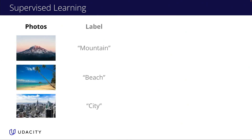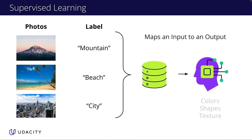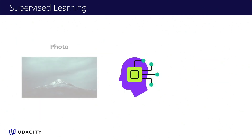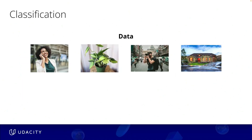In supervised learning, we provide the model with many photos, each with labels such as mountain, beach, or city. The model learns to associate the features of each photo, like colors, shapes, and textures, with these labels. Once trained and given a new photo, the model can predict its label, identifying it as a mountain if it matches what it has learned. This process is known as classification.